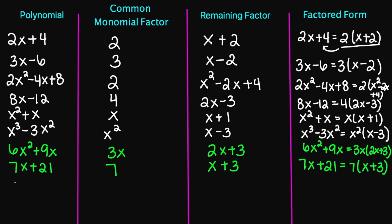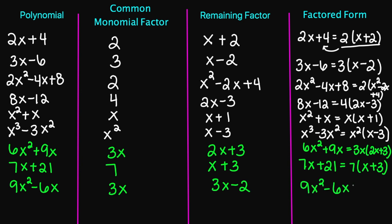Let's try 9x squared minus 6x. My common factor is 3x. If I factor out a 3x, my remaining factor is going to be 3x minus 2. And my factored form is going to be 9x squared minus 6x equals 3x times 3x minus 2.